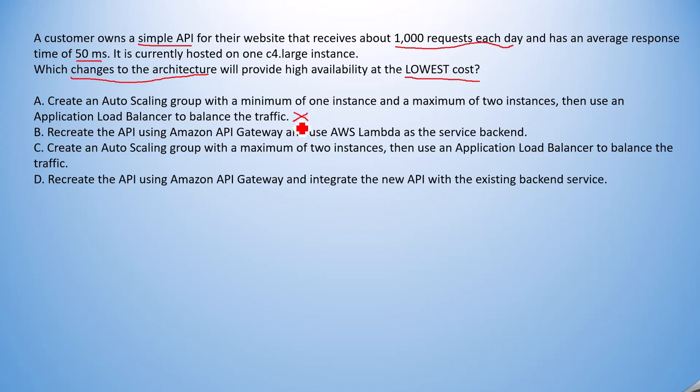Option B: Recreate the API using API Gateway and use AWS Lambda as the service backend. AWS Lambda has a lot of capabilities we can leverage. It can process all your requests — 1000 requests each day — and has the capability to respond within 50 milliseconds. I am not marking this as a wrong answer and will return to it after evaluating the remaining options.